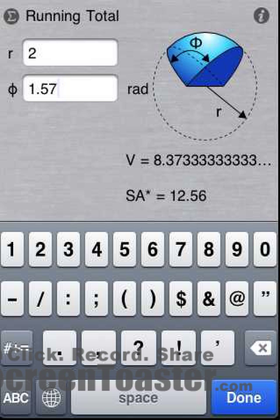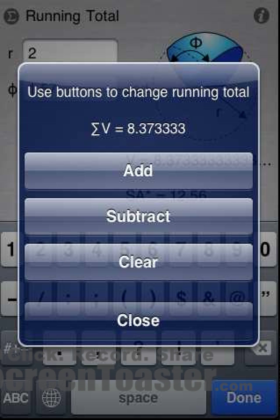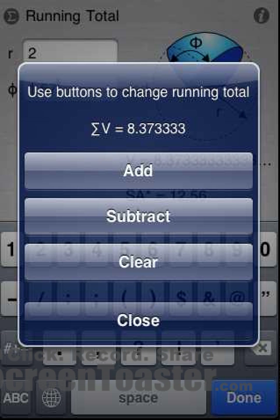To add the current volume result to the running total, press the sigma icon. Press add. Note that multiple shapes can be added and subtracted from this running total.